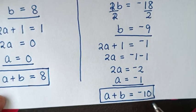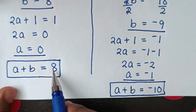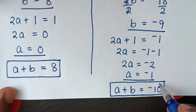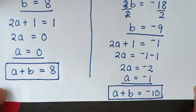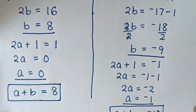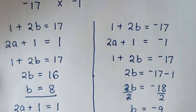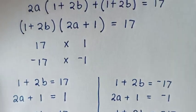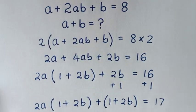So we have two solutions: a plus b equals 8, and a plus b equals negative 10. Thank you for watching. Don't forget to subscribe to my channel and see you in the next video. Bye bye.